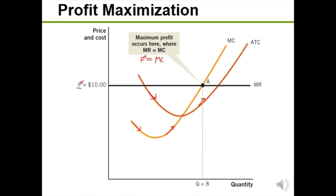The price is given, so is the firm actually making a profit here? This is the profit-maximizing point, but we want to know if it's truly profitable. Looking at the graph, average total cost is below marginal revenue at this point — our average total cost is $8.75 and our price is $10 — which means we are making this rectangle of profit, the difference between average total cost and price.